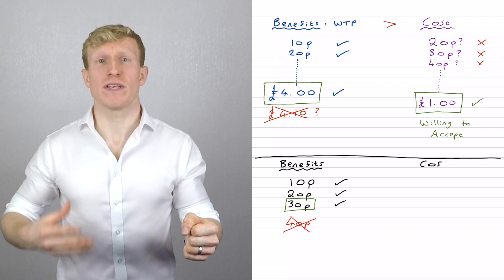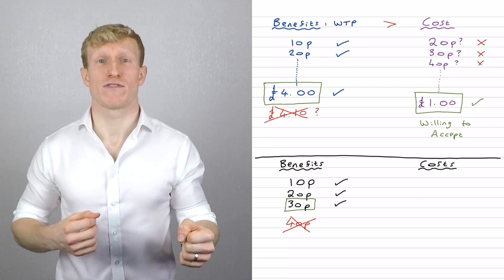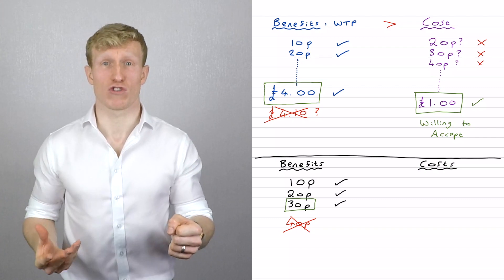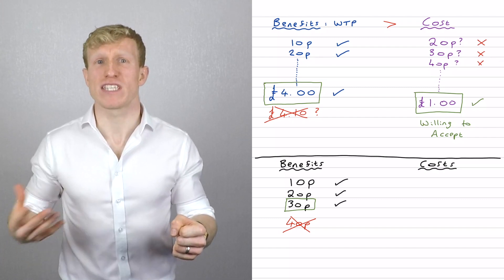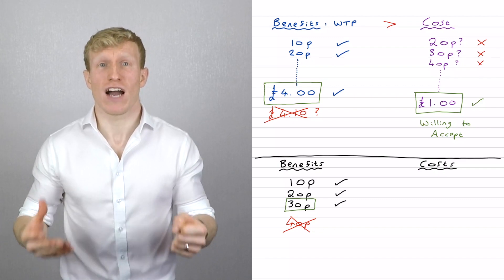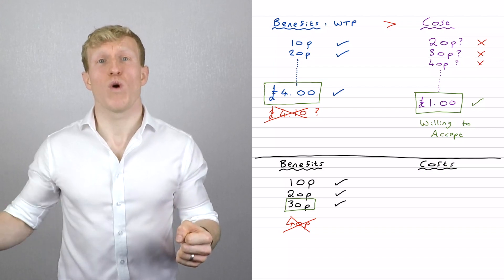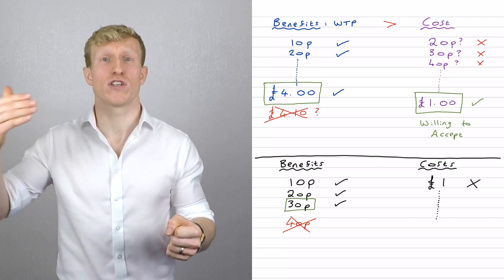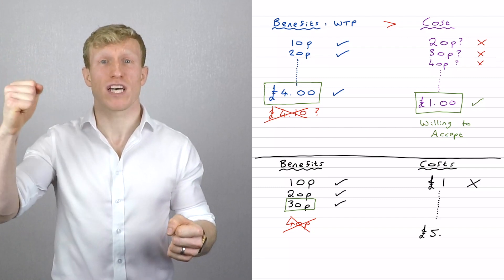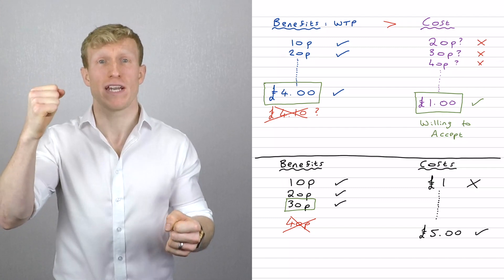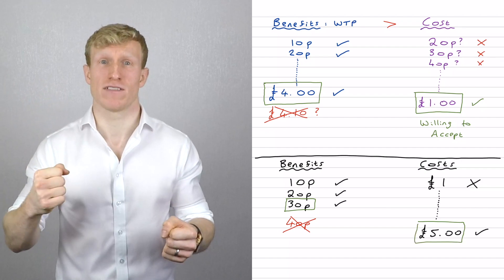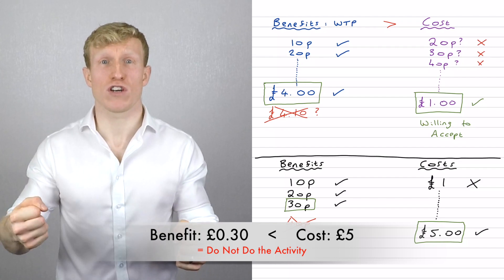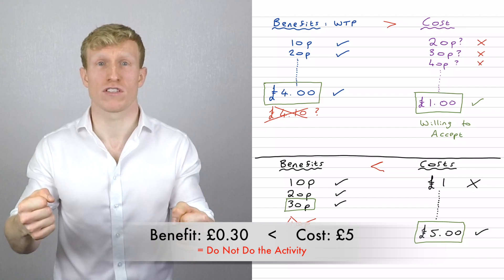Now imagine the costs. You've been sat on the sofa for an hour and a half, there are only a few minutes left, and your friend says, "How much do I need to pay you to get up off the sofa, walk over to the remote control, and then just walk back again?" And you think, I've been sat here for an hour and a half, I'm really comfy, I've got everything I need, I really just want to enjoy the last few minutes of the film. Whereas before I was willing to do this for a pound, now it would have to go to two, three, four, five pounds. Imagine it's five pounds they'd now have to pay you. So the benefit is only 30p and the cost has gone up to five pounds — the benefit is now smaller than the cost, so we shouldn't do it.